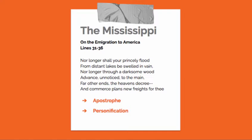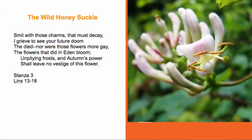Freneau is imagining this 20, 30 years before it actually happens. He's using an apostrophe — a formal address to the river, which of course is not a person — and then personification, not only of the river, but also of commerce. Commerce, this economic force, is given the power to do things, to shape the river. So it's a very interesting passage where Freneau, who in other places seems sympathetic to nature and Native Americans, is here very much about the dream of American commerce.